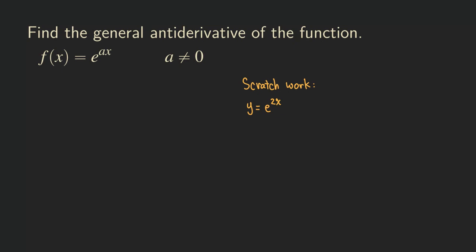In this case, a is equal to 2. We are finding the general antiderivative, but let's first take the derivative of e to the 2x and see what's going on. If we take the derivative of y equals e to the 2x, we get y prime equal to e to the 2x. Then, due to the chain rule, we multiply by the derivative of 2x, which is just 2, giving us 2e to the 2x.